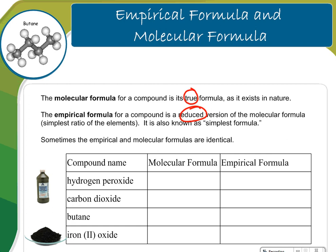The molecular formula for a compound is its true formula, as it exists in nature. The empirical formula for a compound is the reduced version. Sometimes the empirical and molecular formulas are identical.